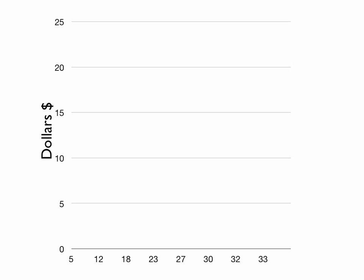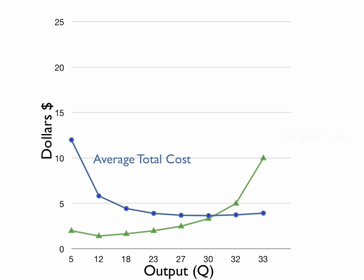Along the y-axis I'm going to plot dollars. Along the x-axis is output. The average total cost curve is in blue, the marginal cost curve is in green, and the average variable cost curve is in orange.